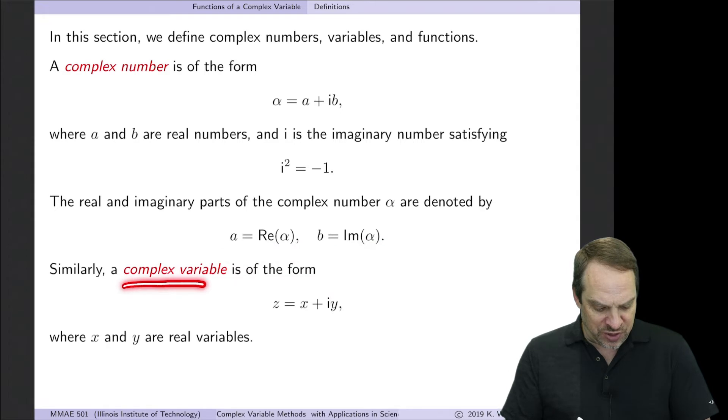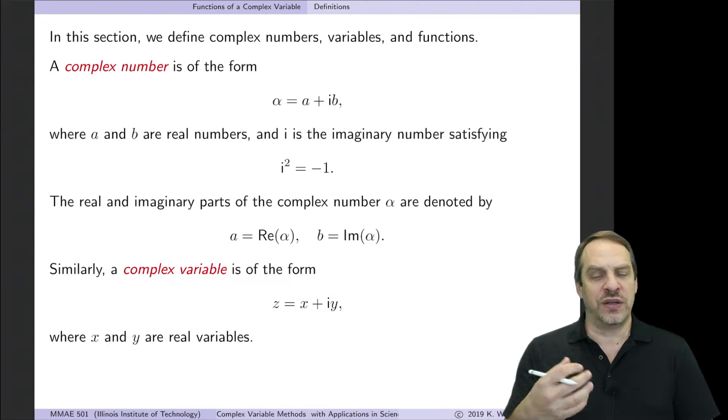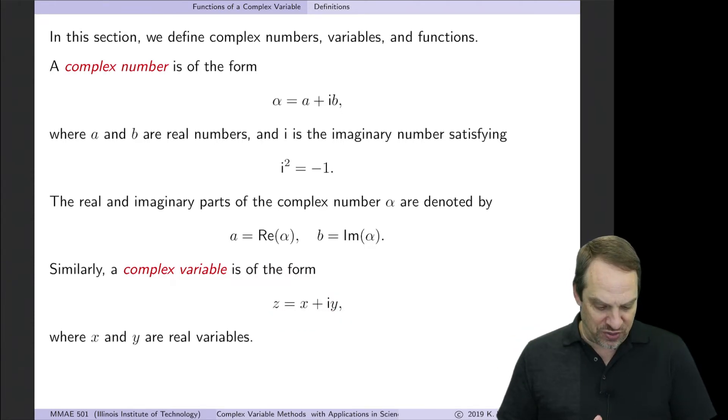A complex variable is similar. The generic complex variable that we'll use is Z. And the real part will be X, and the imaginary part will be Y. So Z is X plus IY will be our generic independent variable that we'll use throughout complex variable theory.